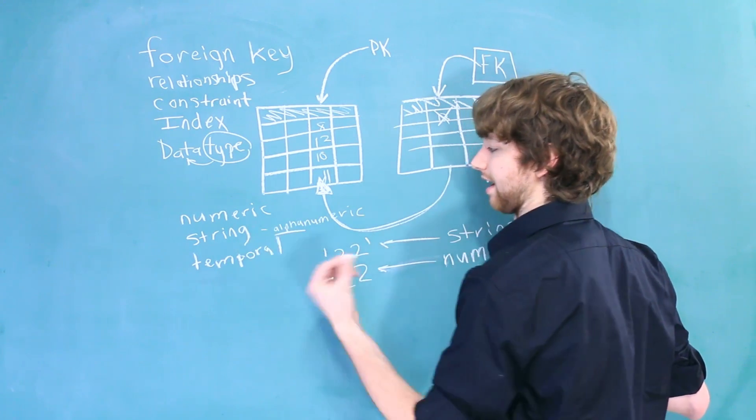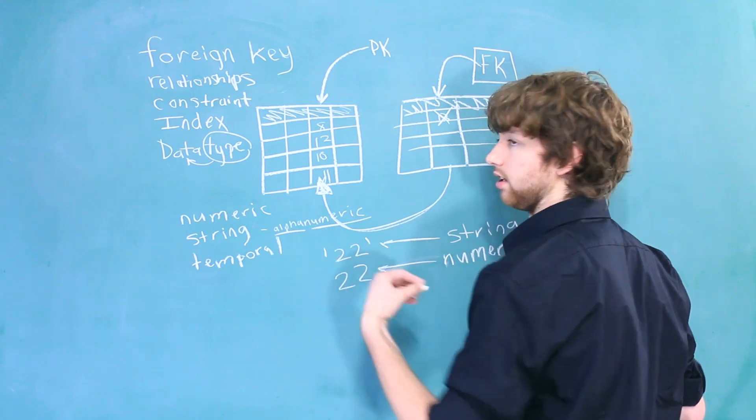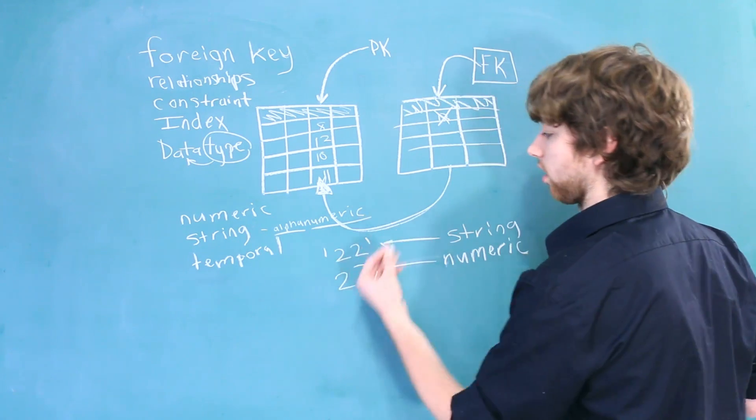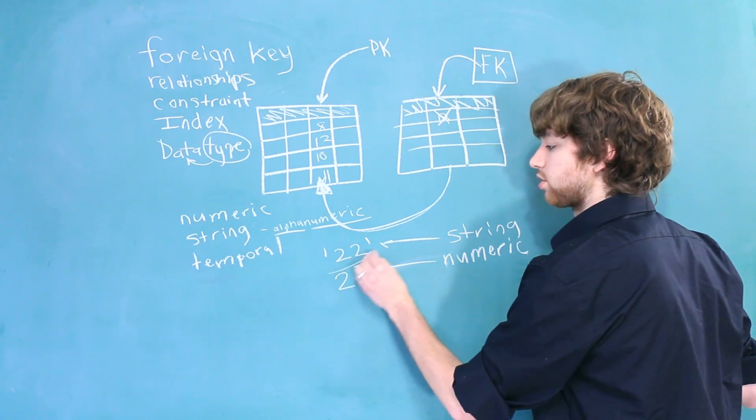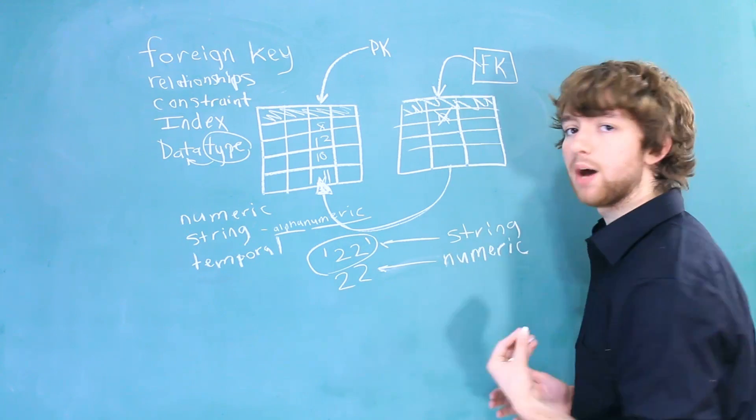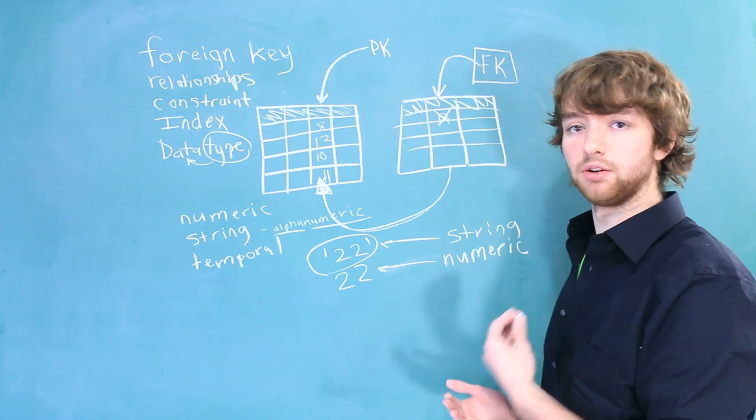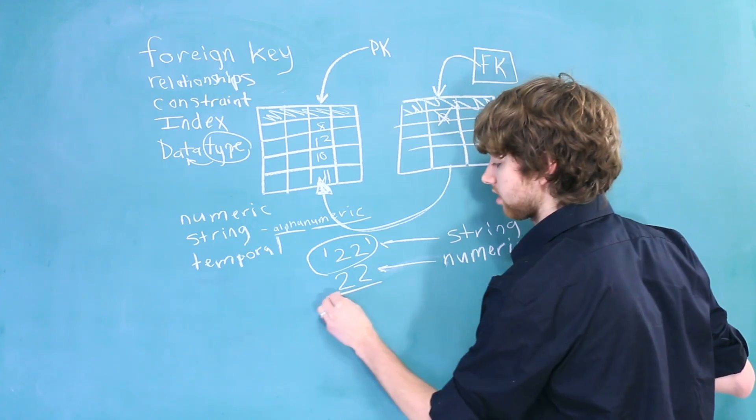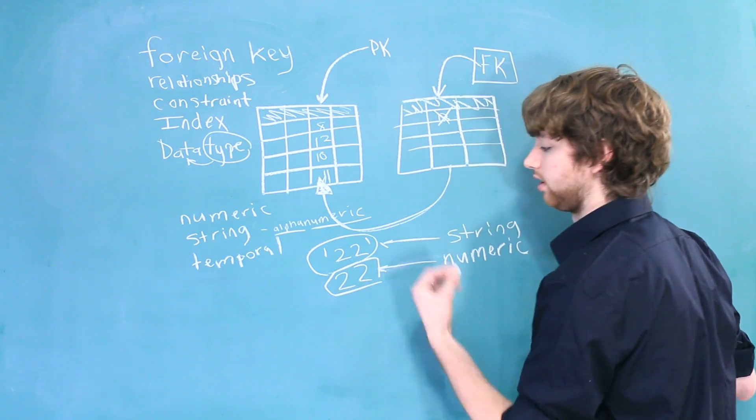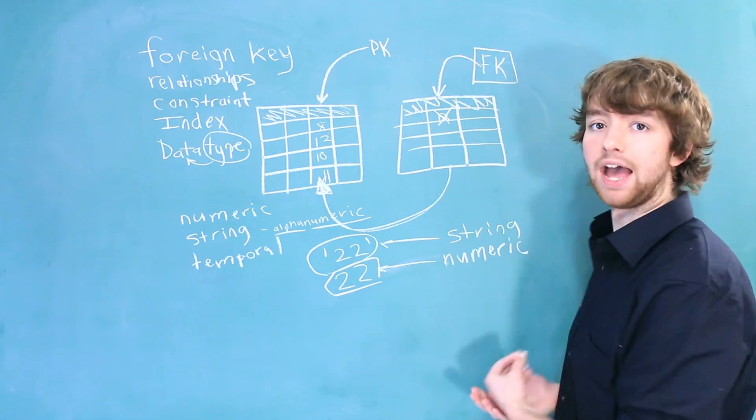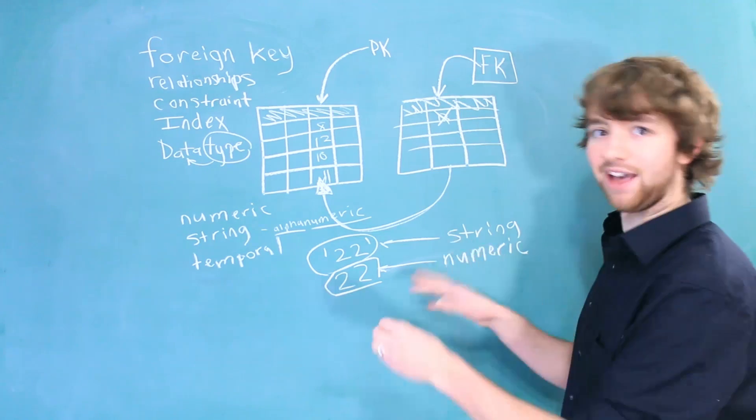So, a string is alphanumeric, and that means alpha as in alphabet and numeric as in numbers. But they don't work like numbers. When you store this as a string, you're not planning on doing math with these numbers. This is a number in the database. Therefore, you can do math stuff with it.